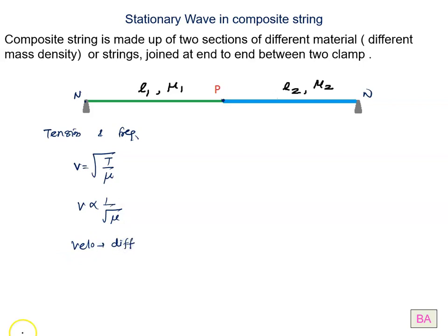What about the wavelength? V equals nu lambda. We have discussed the frequency will be same. When frequency is same, velocity is proportional to lambda. So velocity will change, wavelength will also change. Wavelength is also different.